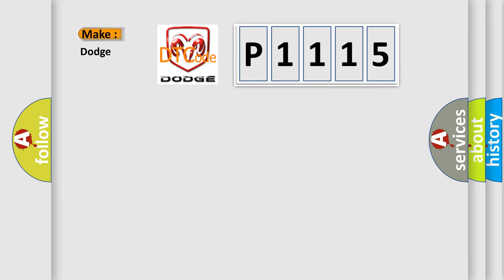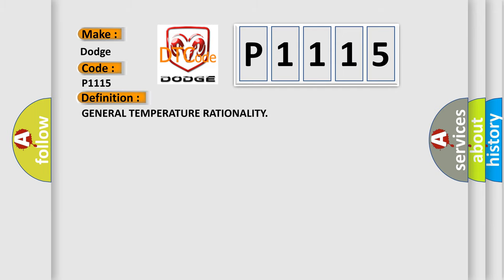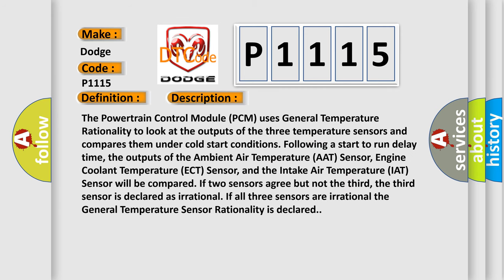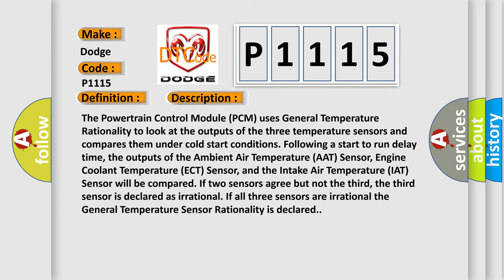So, what does the diagnostic trouble code P1115 interpret specifically for Dodge car manufacturers? The basic definition is General Temperature Rationality. The powertrain control module (PCM) uses general temperature rationality to look at the outputs of three temperature sensors and compares them under cold start conditions following a start-to-run delay time. The outputs of the ambient air temperature (AAT) sensor, engine coolant temperature (ECT) sensor, and intake air temperature (IAT) sensor will be compared. If two sensors agree but not the third, the third sensor is declared as irrational. If all three sensors are irrational, the general temperature sensor rationality fault is declared.